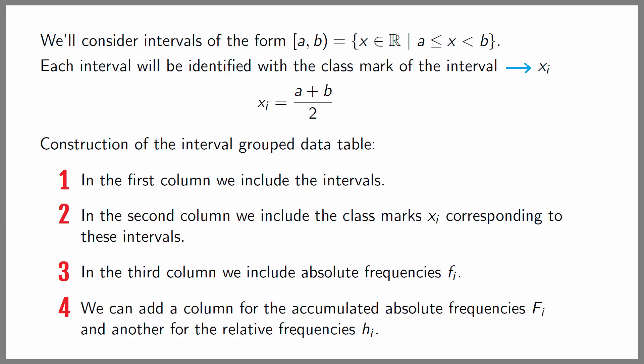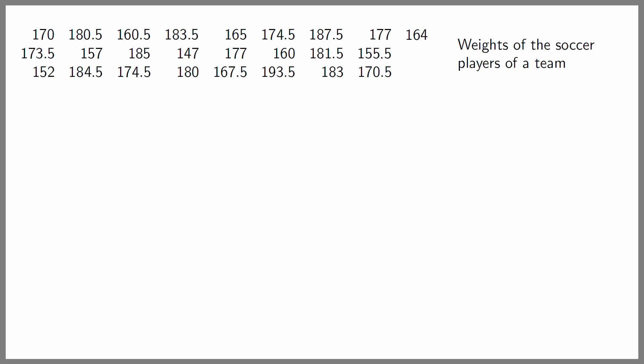Let's look at an example in which we'll obtain a table of data grouped in intervals. After the holidays, the 25 players of a soccer team squad were weighed. On the screen are shown their weights in pounds. As you can see, there's only one repetition of weights where two of the players weigh 177 pounds. If we were to build a simple data table, all the absolute frequencies would be one except the one corresponding to 177 pounds which would be two. So a simple data table would be very long and wouldn't give adequate information about the statistical variable. In this case it's convenient to group the data into intervals.